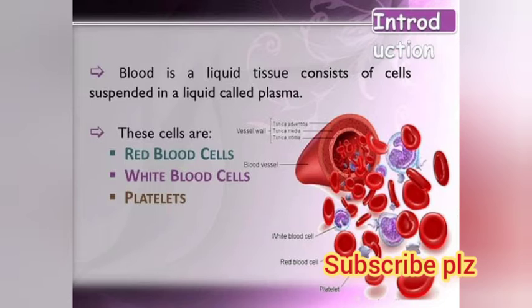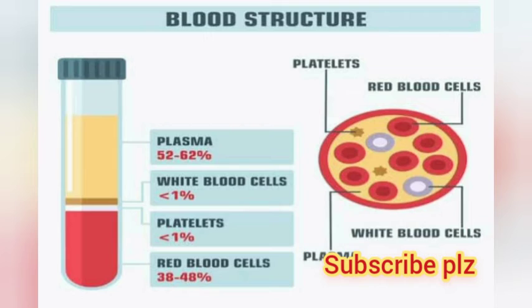Blood consists of plasma 52 to 62 percent, white blood cells 1%, platelets 1%, and red blood cells 38 to 48 percent. You can see the structure of blood — the liquid part is plasma, and the cellular components are WBCs, platelets, and red blood cells.